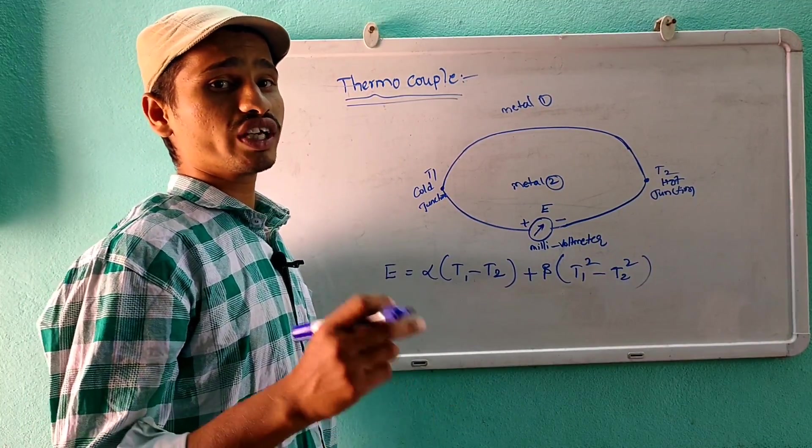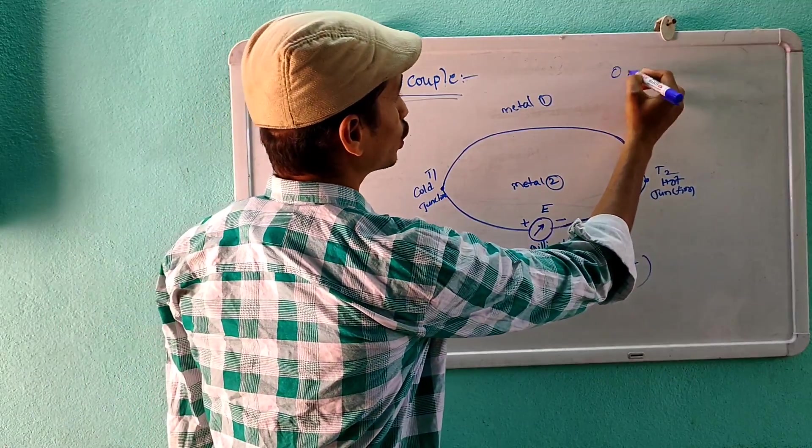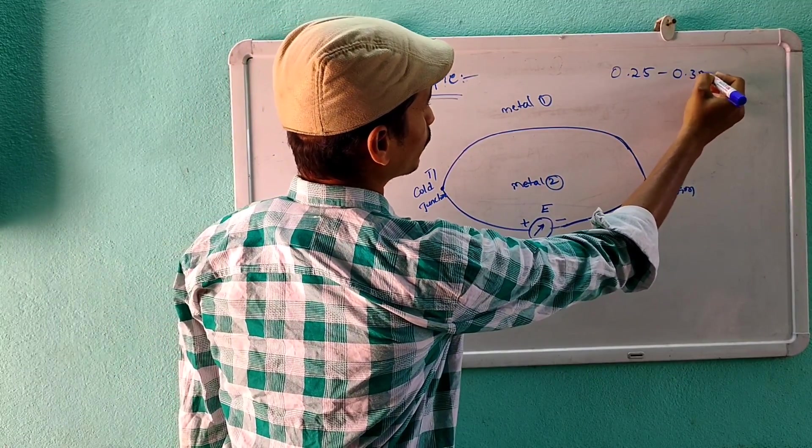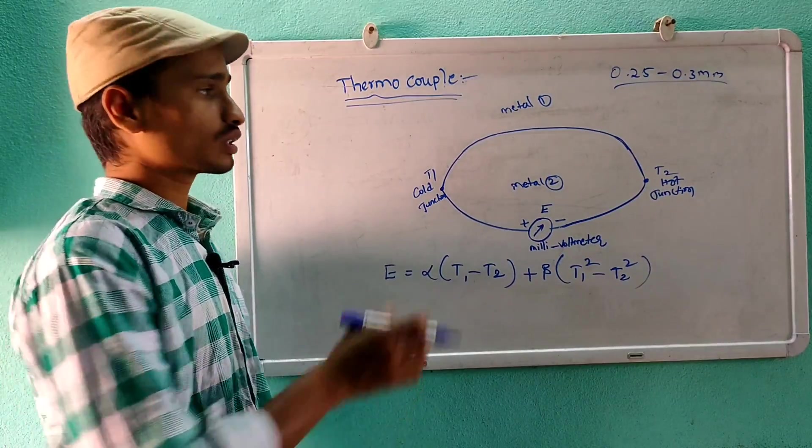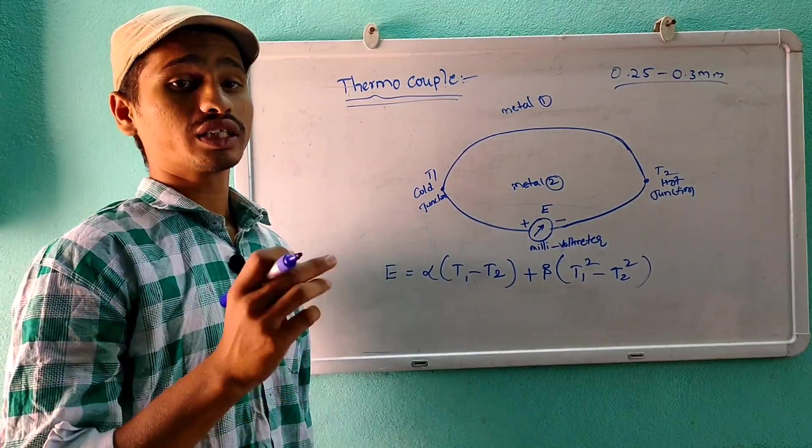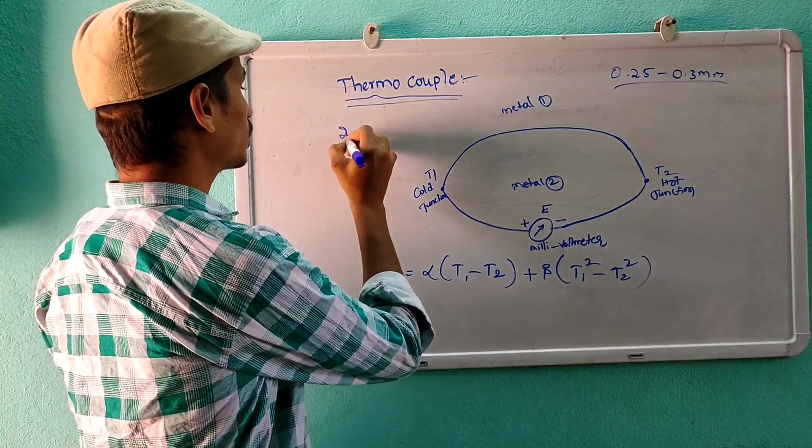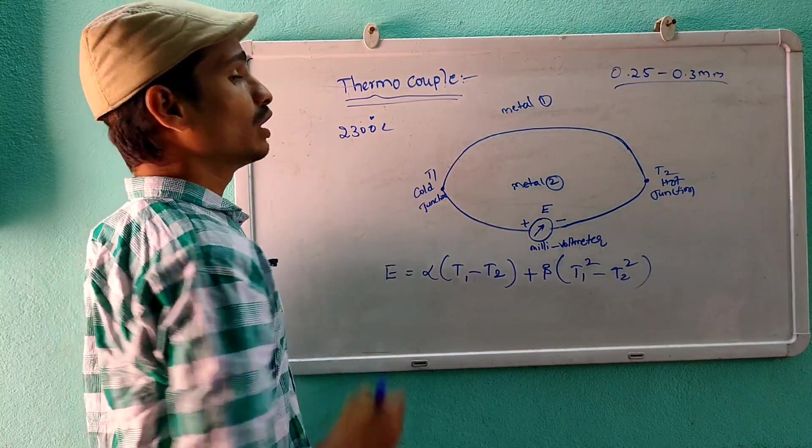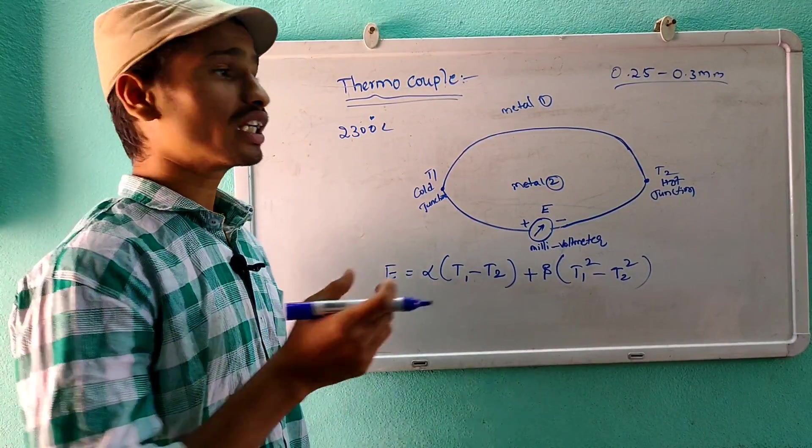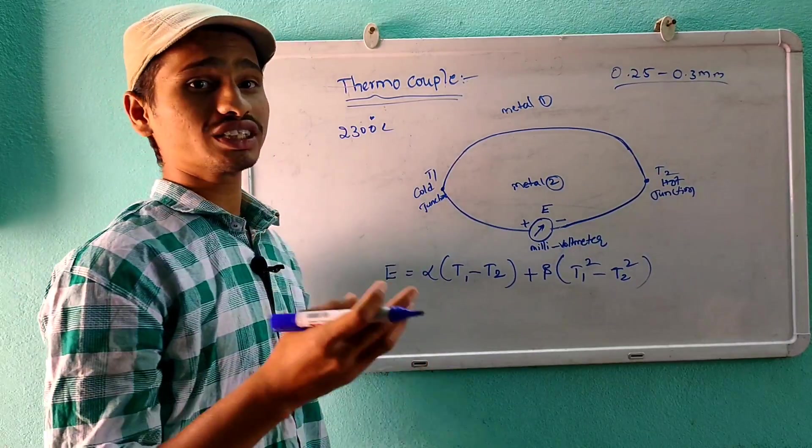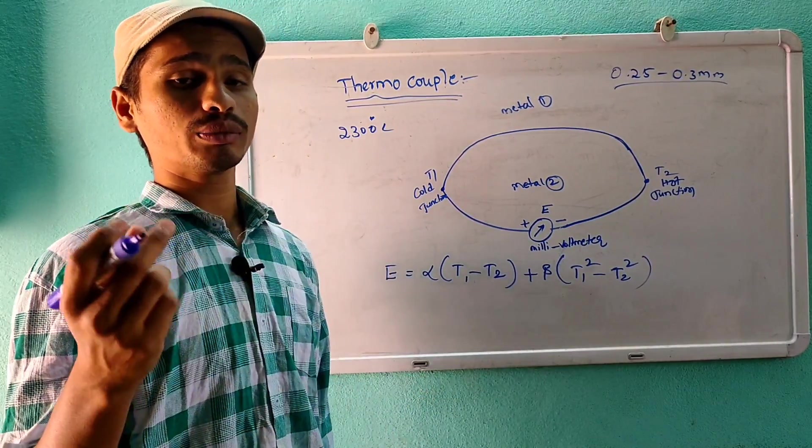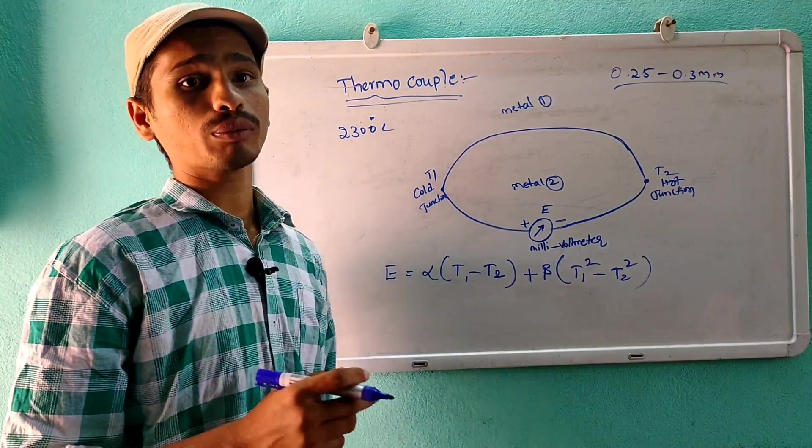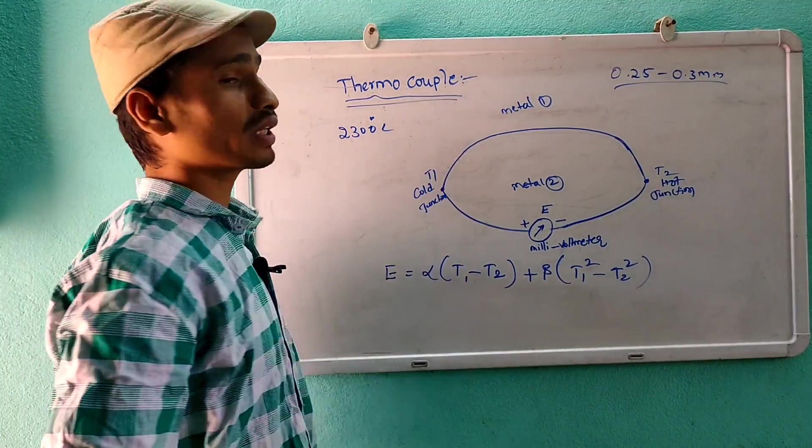Thermocouple size is available in various ranges, basically 0.25 to 0.3 mm range. Thermocouple range efficiency and applications: thermocouples can measure up to 2300 degrees centigrade. They are used in industrial purposes, scientific research level, and medical applications. These are the applications of thermocouple.